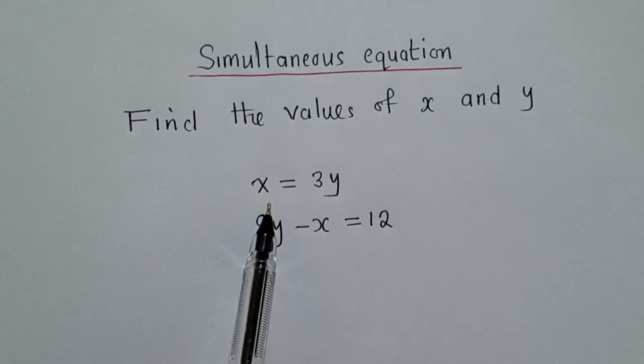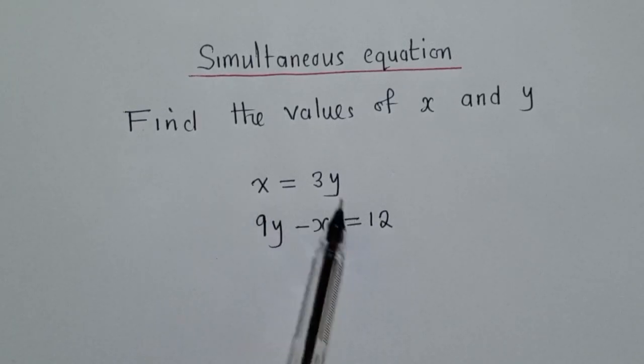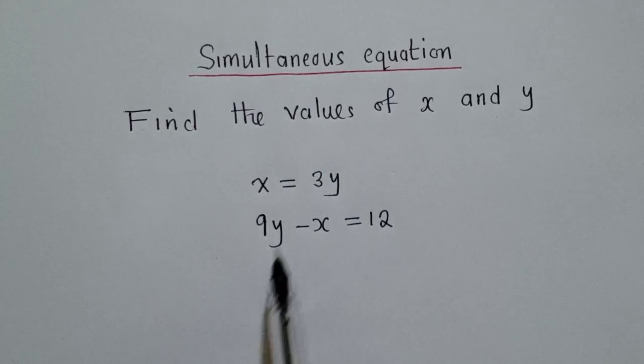So let's solve these simultaneous equations. We've got two equations here, there's the first one here and the second one. How do we find the value of X and Y in this case?